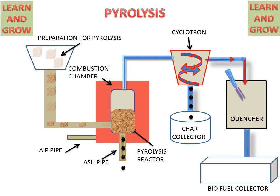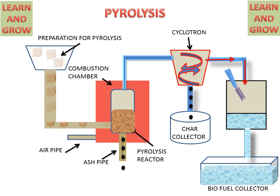The gas then moves to the quencher, where water and gas combine together to produce biofuel, which is collected in the biofuel collector. The remaining gas is either released or reused in the combustion chamber. This completes the pyrolysis process for collecting biofuel and char products from biomass.